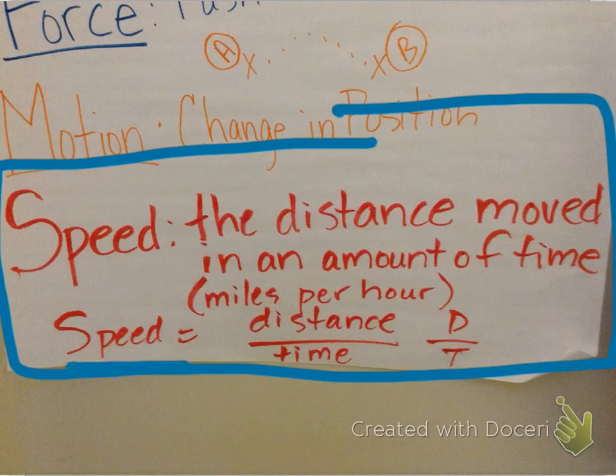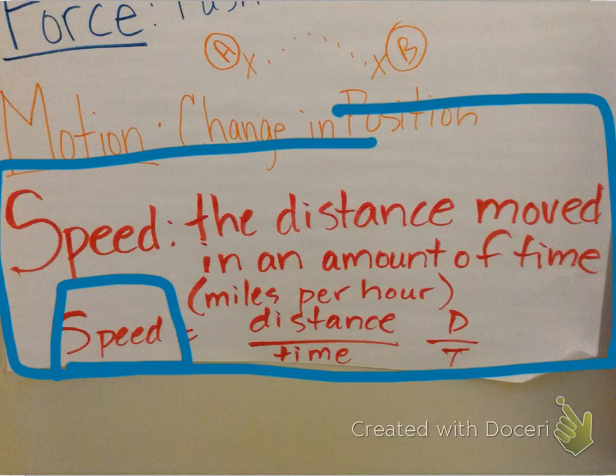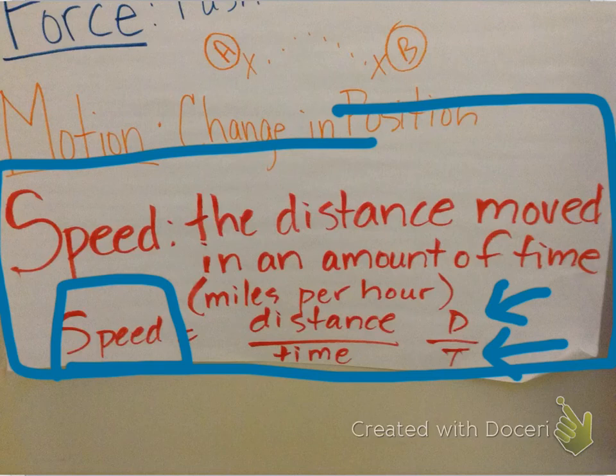The formula for speed is right here, and that's distance over time, or distance divided by time. You're going to need to be familiar with how to use this formula. Like miles per hour, it's the distance divided by the time.